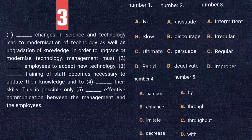For blank number two — 'management must [blank] employees to accept new technologies' — the options include dissuade, persuade, and deactivate. 'Dissuade' means to discourage, which is out of context; 'deactivate' doesn't fit either. 'Persuade' is the correct option C: 'management must persuade employees to accept new technology.'